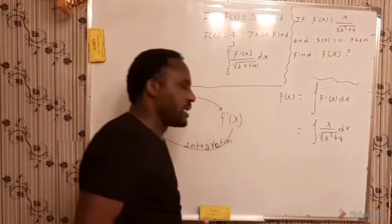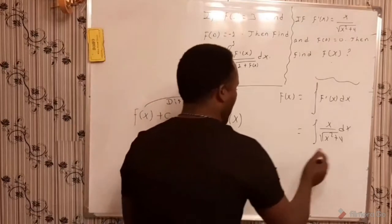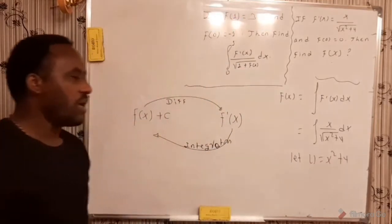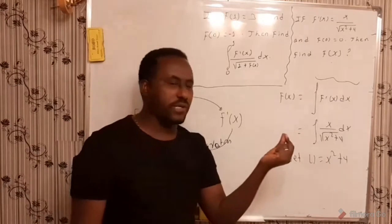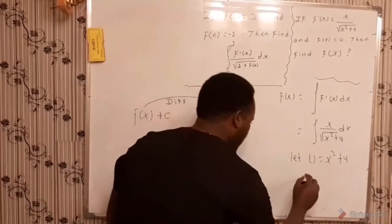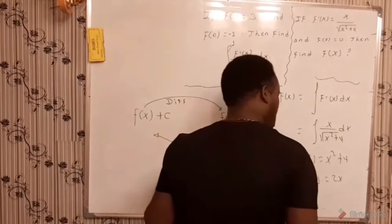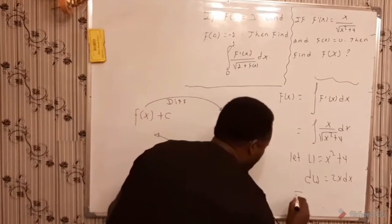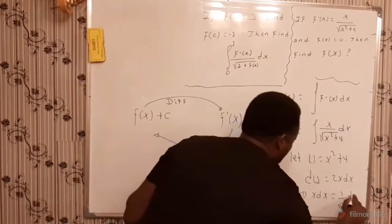In order to find the integral of this problem, which is a rational function, we apply one of the very important techniques: u-substitution. Let's replace u equal to x squared plus 4, because in the case of substitution we substitute the function of the highest degree. So let u equal x squared plus 4, then du equals 2x dx, because the derivative of any constant is 0. Solving this, x dx is immediately given by one over 2 times du.